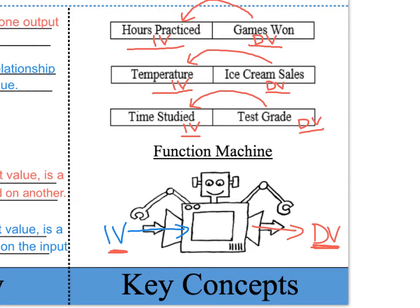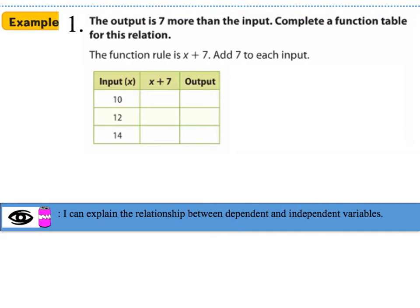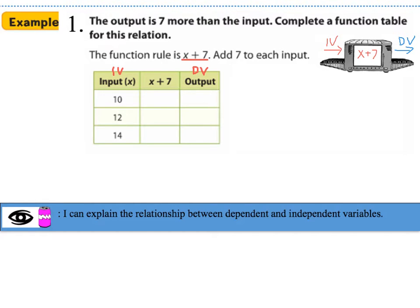Let's use these key concepts to discuss the following examples. For example 1, it says the output is 7 more than the input. Complete a function table for this relation. The function rule is x plus 7, so this is the relationship between the input and the output — we're going to add 7 to each input. The input is my independent variable and the output is my dependent variable. So if I take the number 10 and plug it into the function machine, the relationship is 10 plus 7, and the output becomes 17.